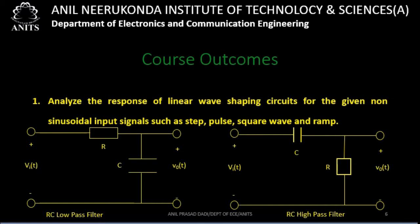The types of input we are likely to apply are: step input, pulse input, square wave input, and ramp input. So the outcome is: when either of these circuits is given, and one type of input is applied, finding the response is the expected outcome. We will see later why these circuits are named RC low pass filter and RC high pass filter when we go into the units in detail.